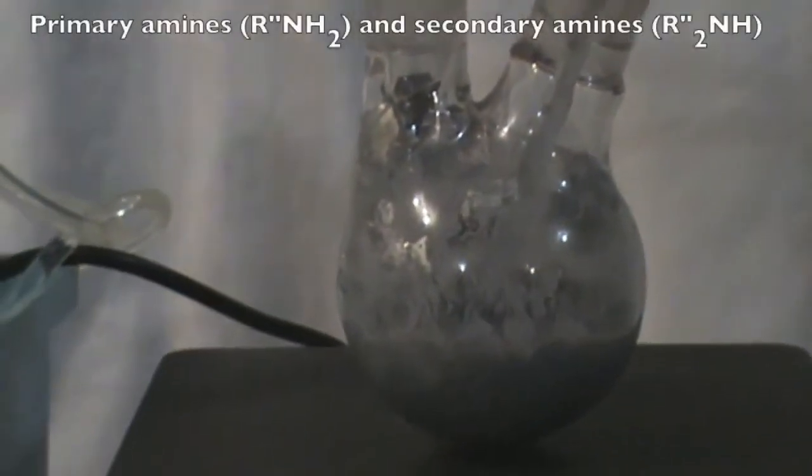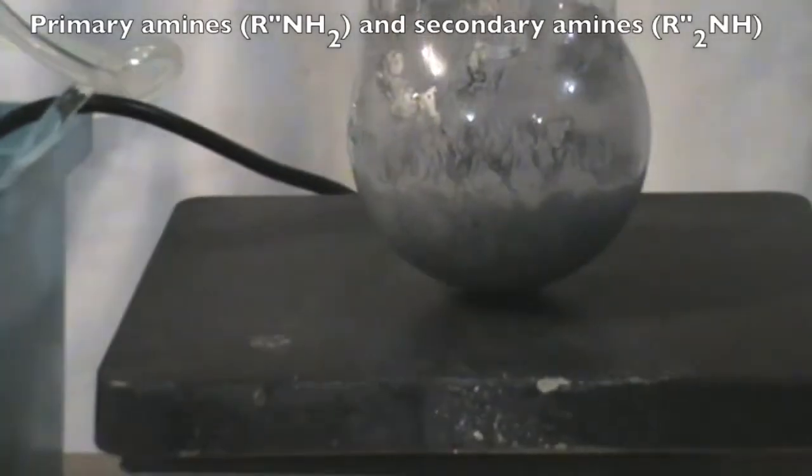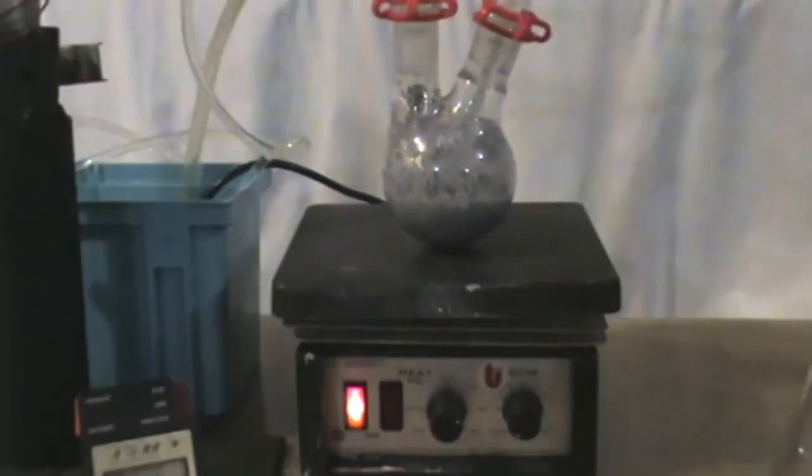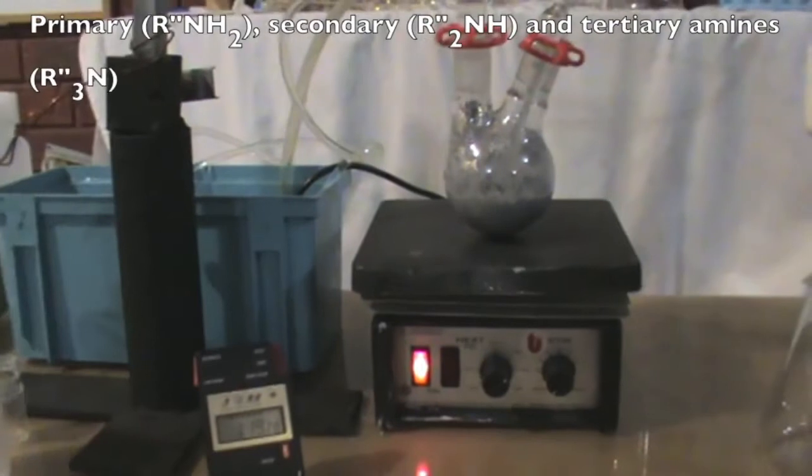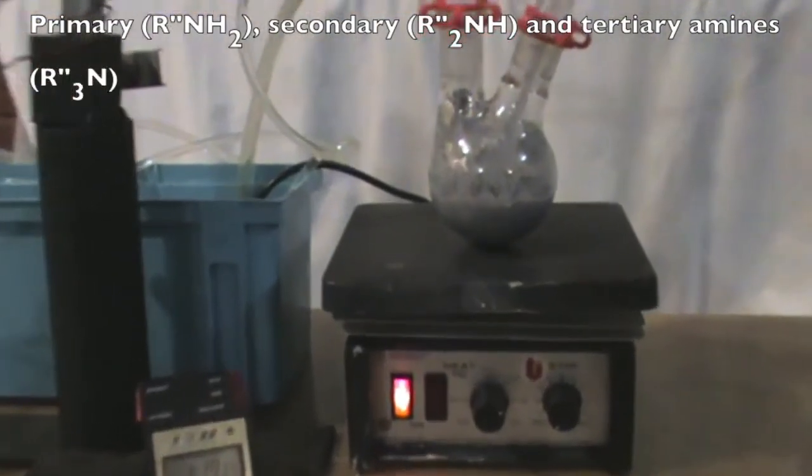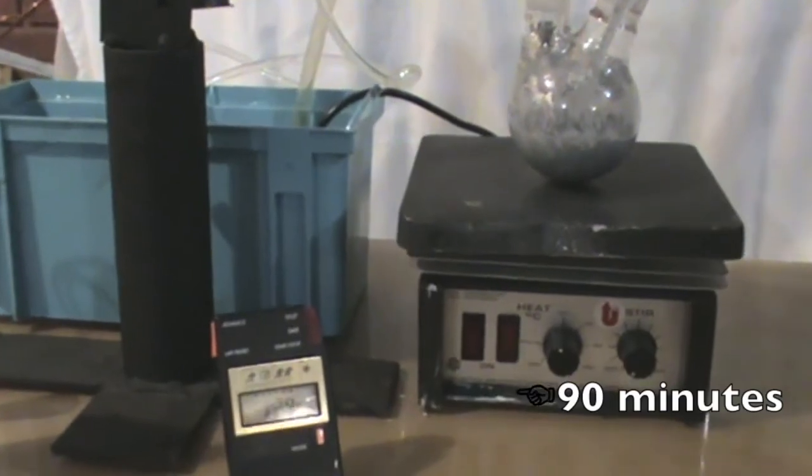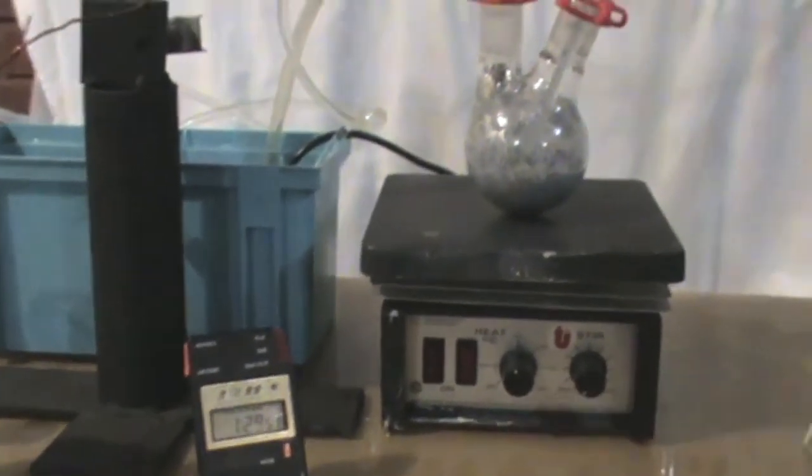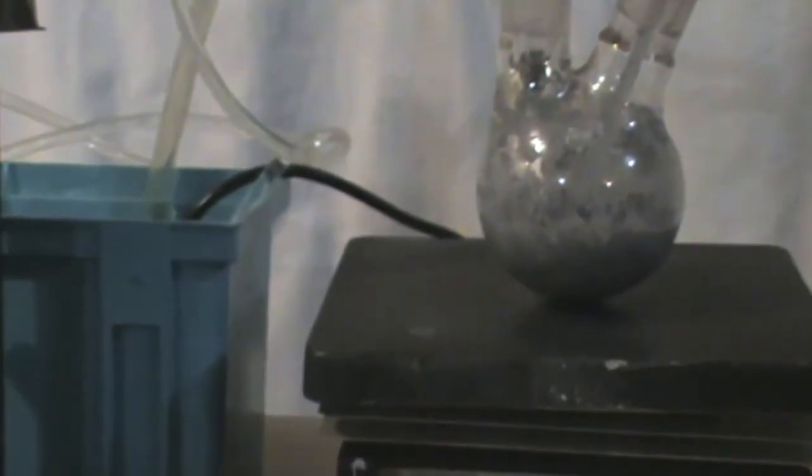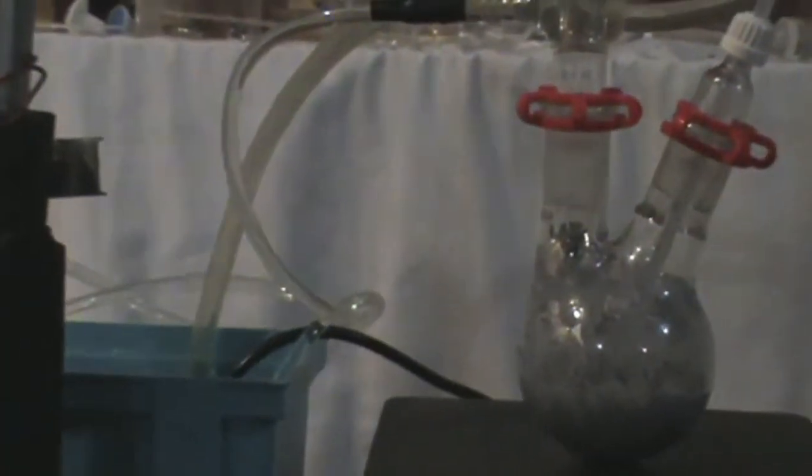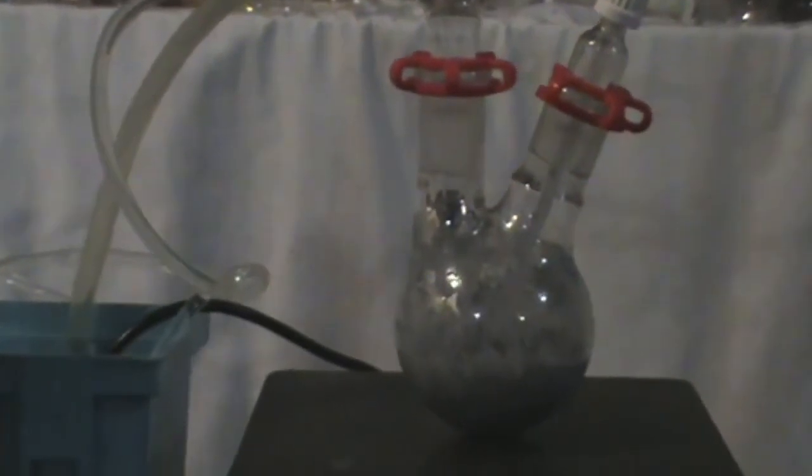Ammonia, primary amines and secondary amines can all be used in the reductive amination reaction yielding primary, secondary and tertiary amines respectively. Nearing the completion of the reaction, the coloration of the mixture has deepened to a very dark grey color and all of the activated aluminum has been dissolved.